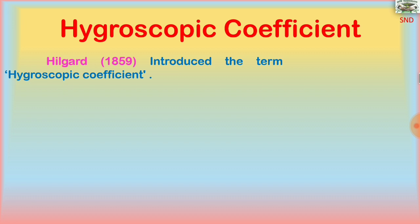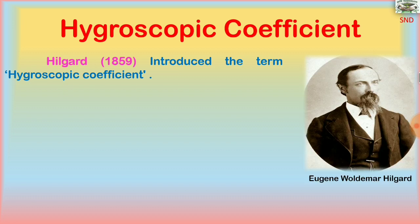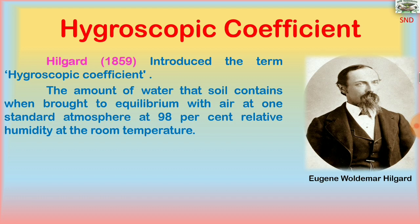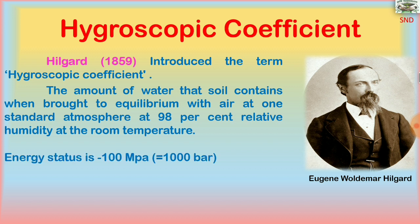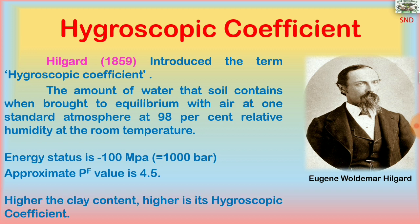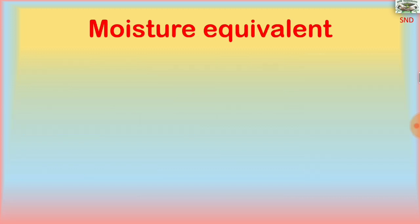Hilgard in 1859 introduced the term hygroscopic coefficient. It is the amount of water that soil contains when brought to equilibrium with air at one standard atmosphere, at 98% relative humidity at room temperature. The energy status is minus 100 megapascals, equal to 1000 bar, with an approximate PF value of 4.5. Higher the clay content, higher is its hygroscopic coefficient.